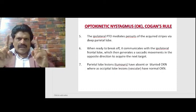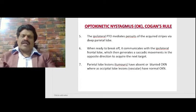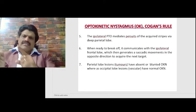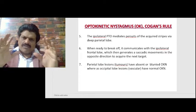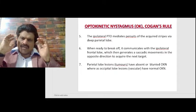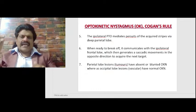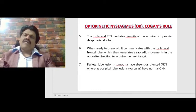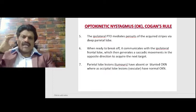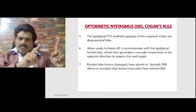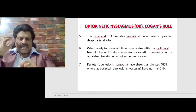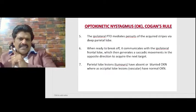Horizontal eye movements include slow pursuit movements and rapid saccades. The center for all horizontal eye movements is the PPRF in the pons. The saccadic pathway originates from the frontal eye fields, area number 8, and goes to the PPRF. The pursuit pathways originate from the ipsilateral parietotemporal occipital cortex, which mediates pursuit of the acquired stripes via the deep parietal lobe. When ready to break off, it communicates with the ipsilateral frontal lobe, which generates a saccadic movement in the opposite direction to acquire the next target.